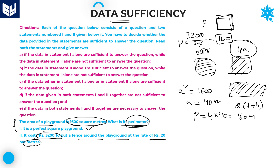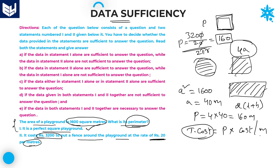Even if we assume it is a circle, circumference = 3200 ÷ 20, which also gives the perimeter. For any shape, total cost = perimeter × cost per meter. Since total cost and cost per meter are both given, it is very easy to get the perimeter. By using statement 1 alone you get the answer, and by using statement 2 alone you also get the answer. Therefore the required answer is option C.